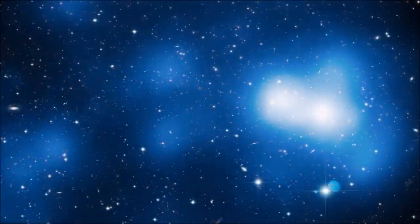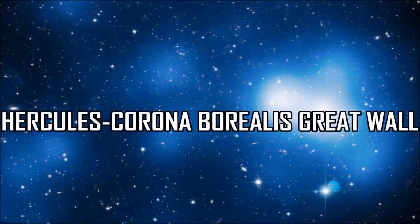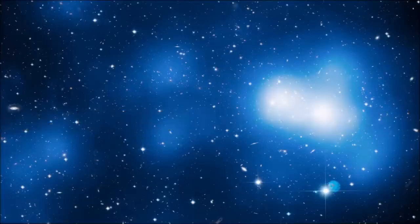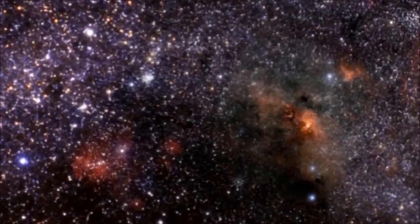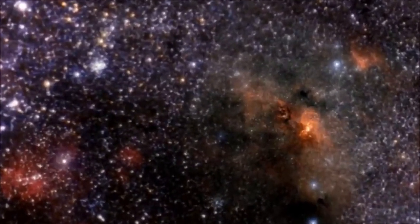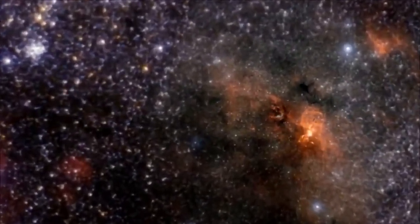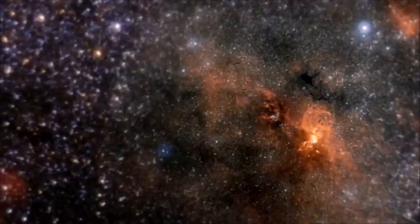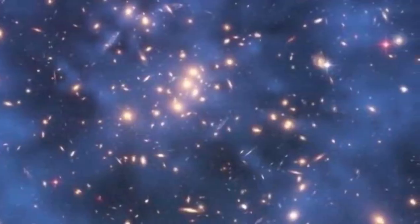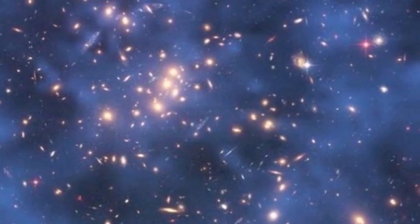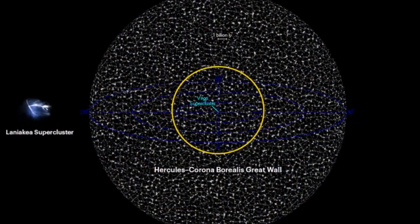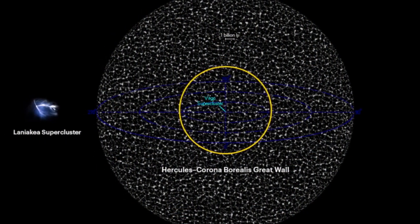The largest structure known to mankind is the Hercules-Corona Borealis Great Wall. It is a large-scale structure in the universe, consisting of a chain of galaxy superclusters. It is located approximately 10 billion light-years away from Earth and is considered to be one of the largest known structures in the observable universe, spanning a length of about 10 billion light-years.